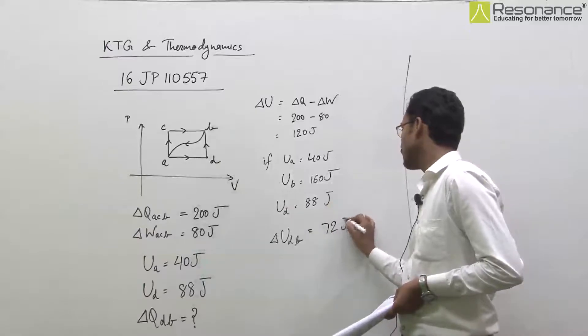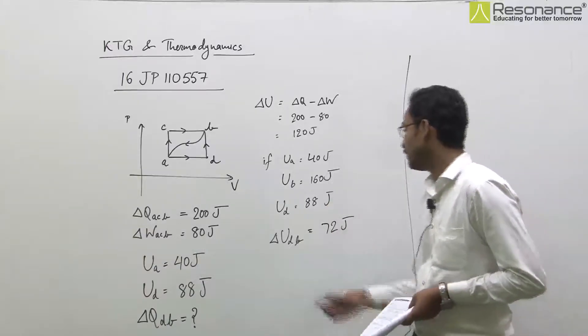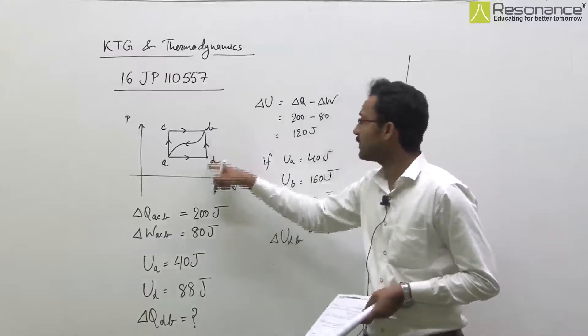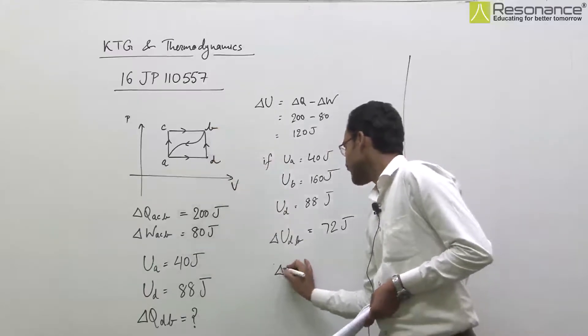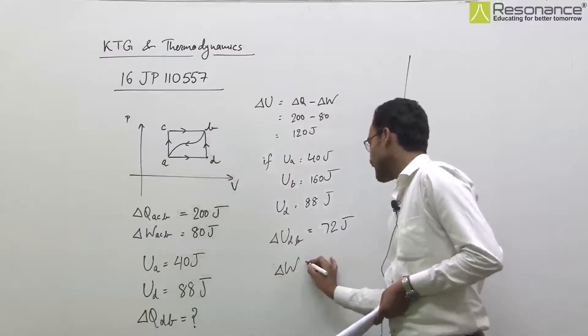wo 72 joule hoga, aur is process mein work done 0 hai, as volume of the gas is constant.